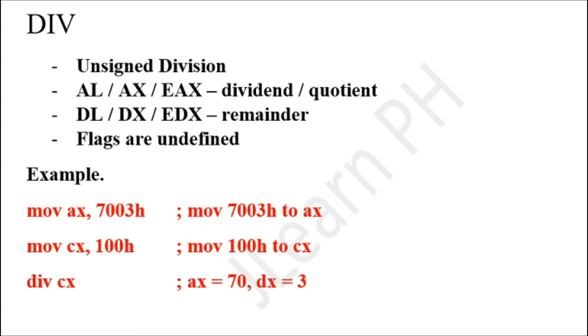For example, we have MOV AX, 7003h. This moves 7003h to AX register, and that will be our dividend. Then we do MOV CX, 100h, which moves 100h to CX. This will be our divisor.